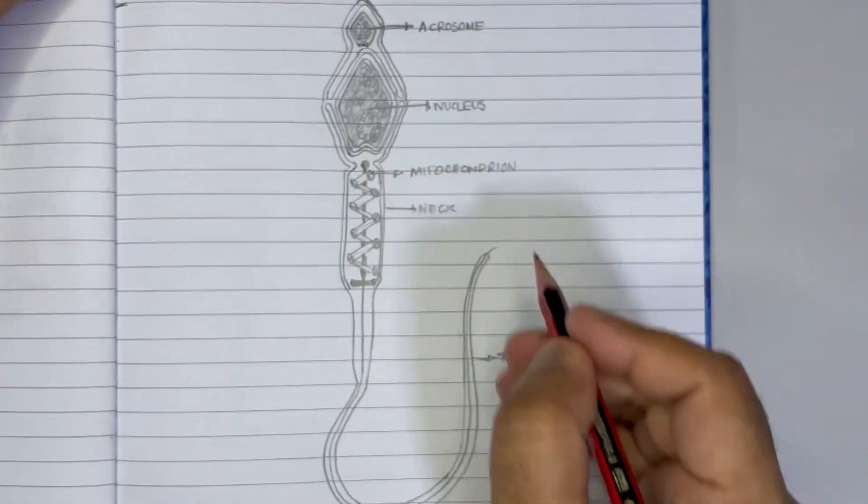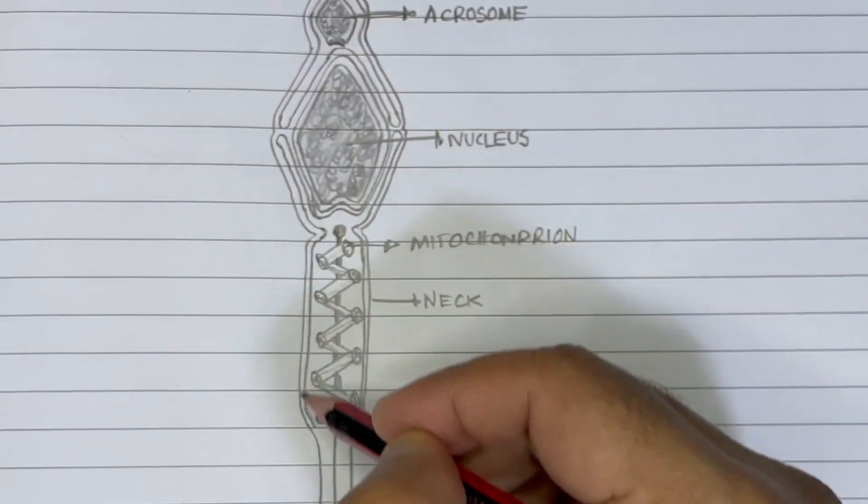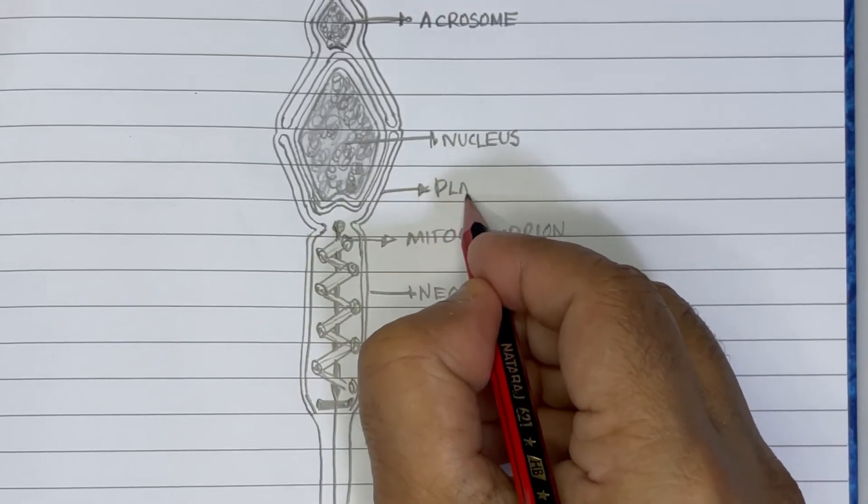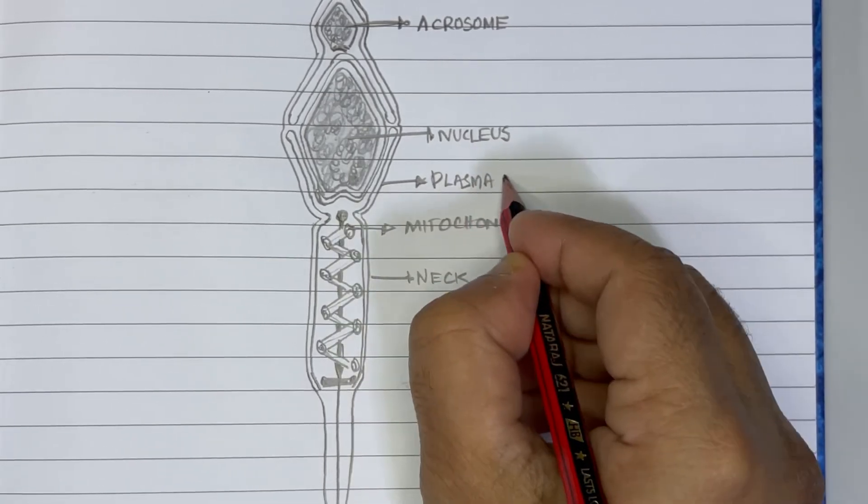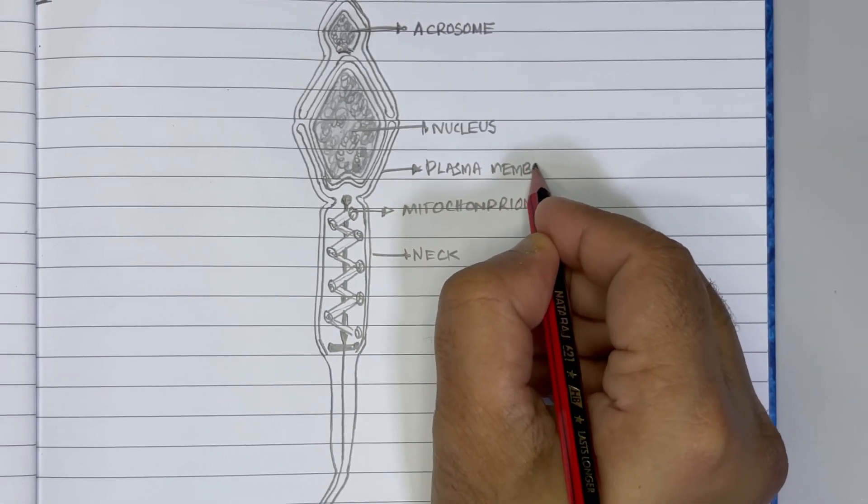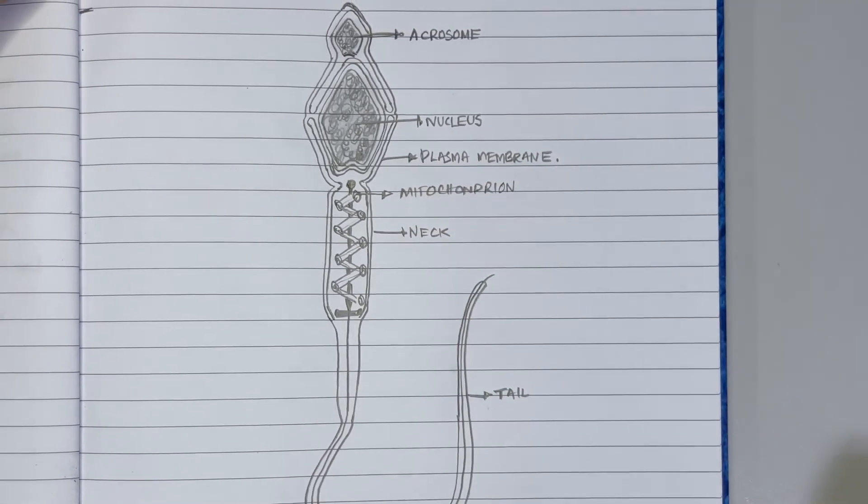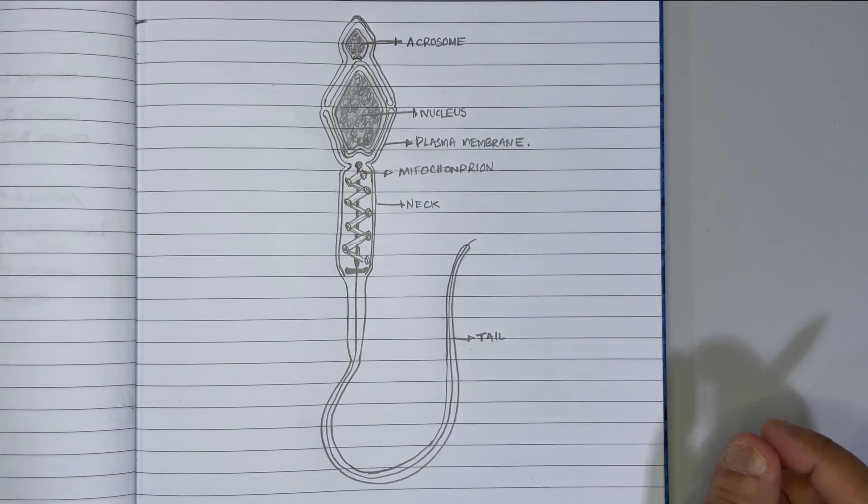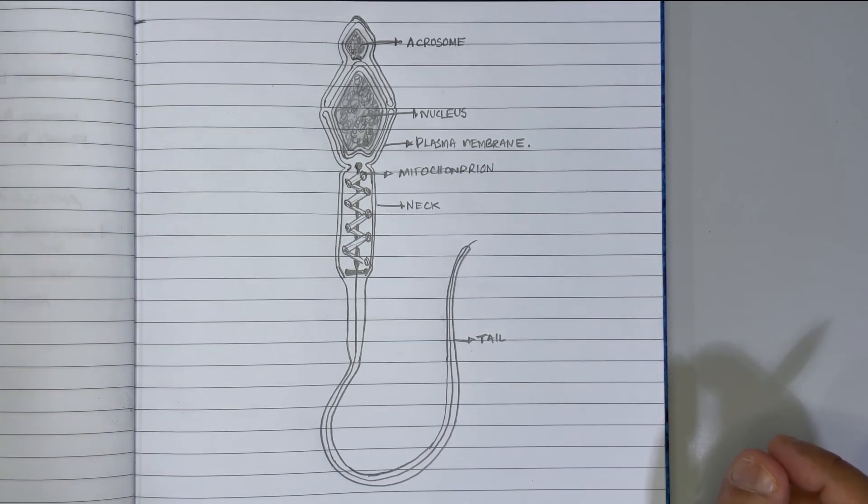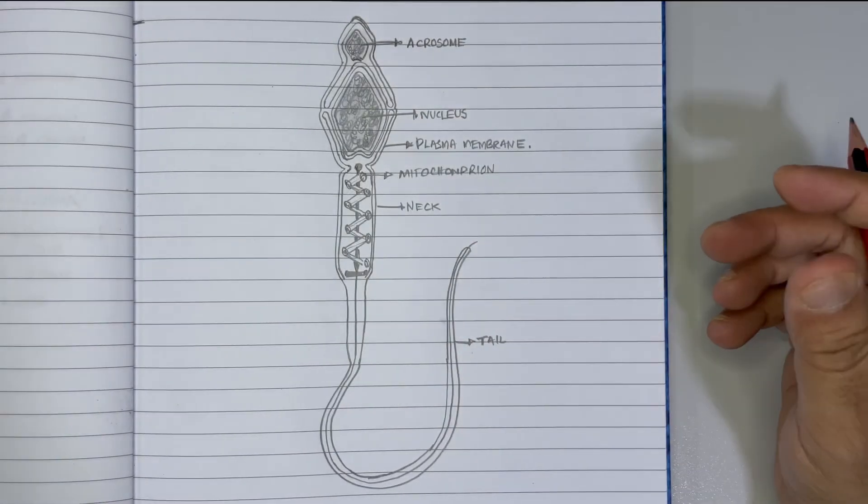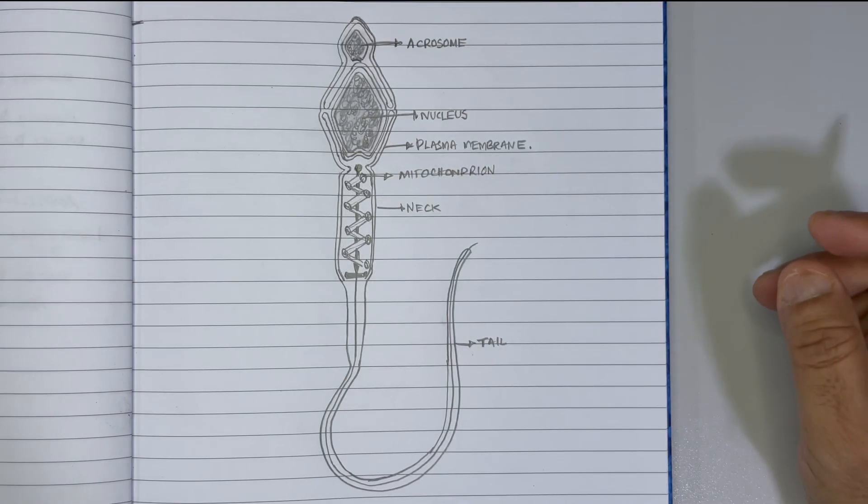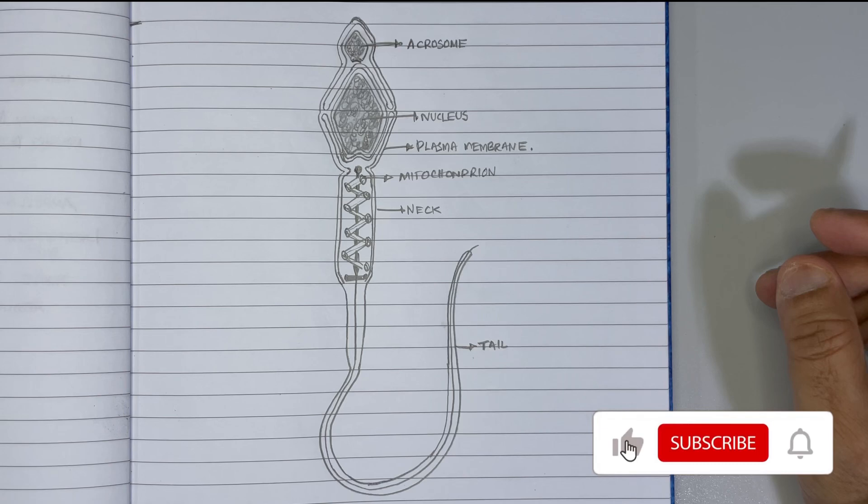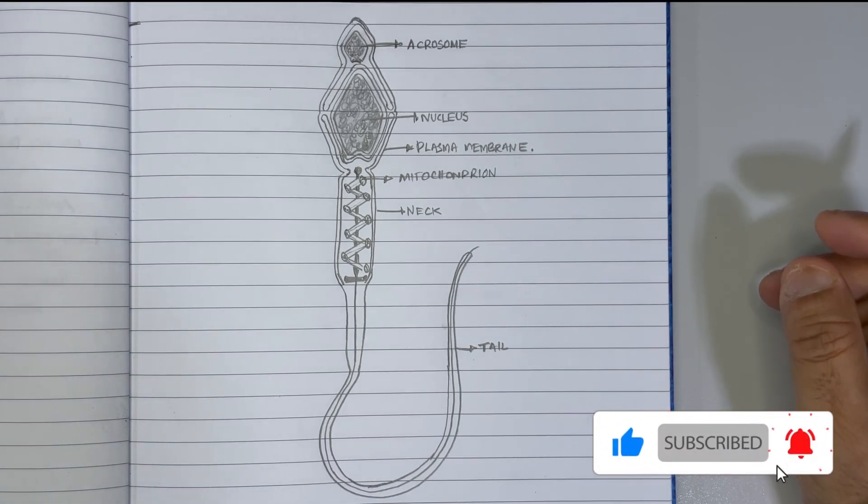One more thing is there. The outermost layer we drew all the way till here, so that is the plasma membrane. Let us draw it here. So that's it guys. This is how we draw the structure of sperm. Hope you understood the process and especially given importance for the various size proportions. Draw and practice. Thank you for watching, bye.